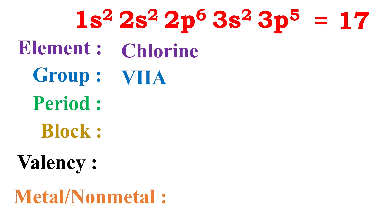Let's find out the period of this element. To find out the period, we have to count the number of shells present in this atom. It has a total of three shells, because 1 is written once, 2 is written in two places, and 3 is written in two places. Altogether it has just three shells or three orbits, and the number of orbits represents the period of that element. So it falls in the third period of the periodic table.